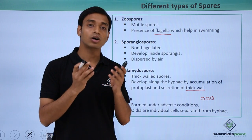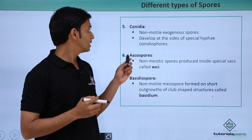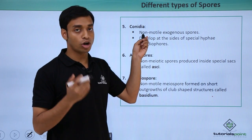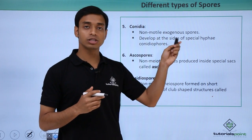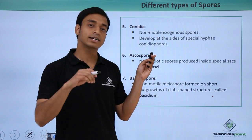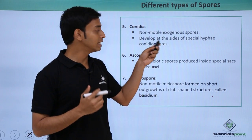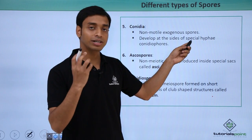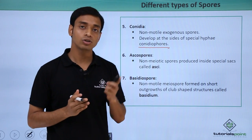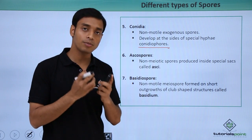The next type is known as conidia. These are also non-motile and are exogenous spores, formed from the outside. They mostly develop at the sides of special hyphae known as conidiophores. In the conidiophores, these conidia are formed — spores which are non-flagellated, non-motile, and exogenous.